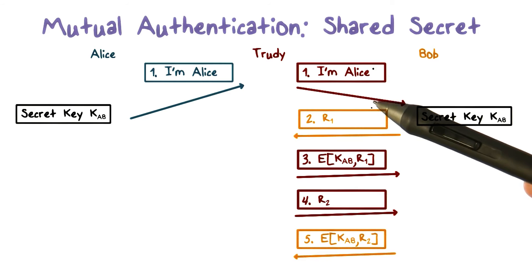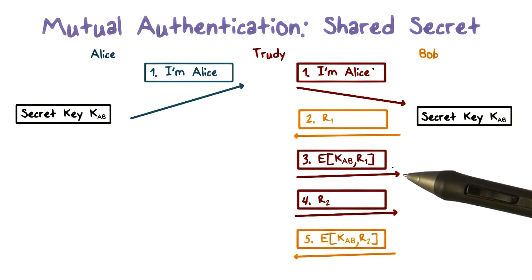Suppose Trudy has spent time recording the authentication messages between Alice and Bob across multiple sessions. Now, if when Trudy tries to impersonate Alice and Bob happens to send R1, a challenge that has been used previously and recorded by Trudy, then Trudy can simply send the response that she had recorded from Alice. That is, Trudy is able to send the ciphertext of R1 to Bob, and Bob will be tricked to believe that she is Alice.